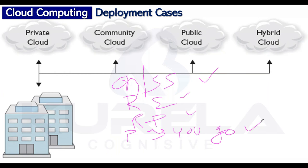However, the last quality — broad network access — we do not have. portal.tcs.com is only accessible within the TCS organization. If you come outside the organization and try to access it on the open internet, it will not work. This is intentional — it is private, local to TCS, and accessible only on the TCS LAN. Because broad network access is missing, we call this a private cloud.